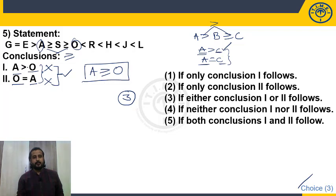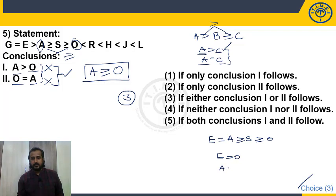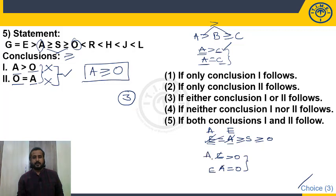Conversely, it is not always required that terms be the same to get 'either or.' Example: E = A ≥ S ≥ O. Conclusions are E > O and A = O. Since E = A, you can substitute A for E or vice versa. The relation between A and O is A ≥ O, giving A > O or A = O. Since E = A, the relation between E and O is also E ≥ O, giving E > O or E = O. So 'either or' still applies even though the terms E and A differ — because of the equality E = A.